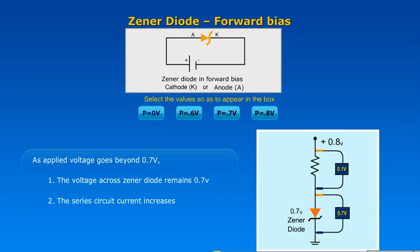The series circuit current increases. The remaining voltage beyond 0.7V is dropped across the resistor.